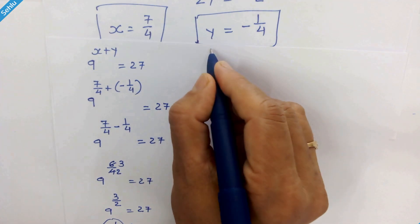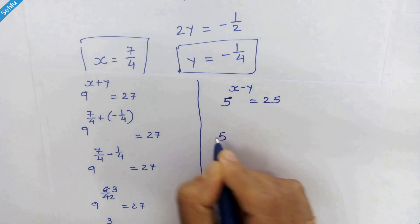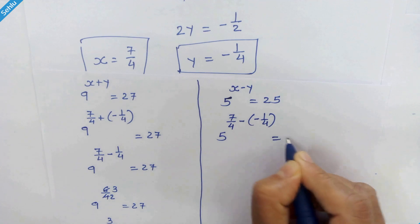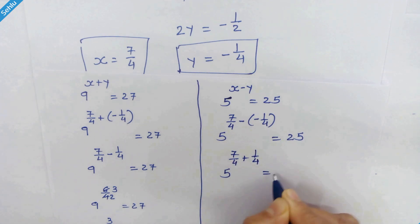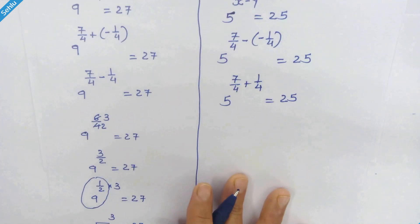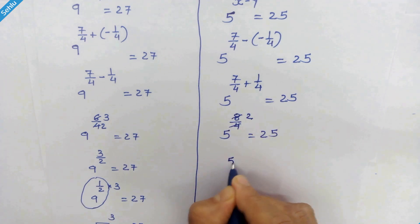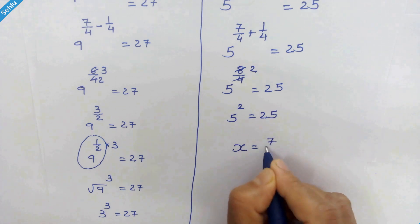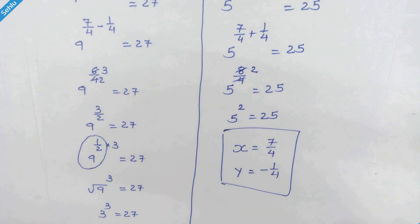Now for equation 2: 5 raised to x minus y is equal to 25. Substituting, we get 5 raised to 7 upon 4 minus minus 1 upon 4, which is 5 raised to 7 upon 4 plus 1 upon 4, equal to 5 raised to 8 upon 4, which simplifies to 5 squared is equal to 25. So x equal to 7 upon 4 and y equal to minus 1 upon 4 are the correct answers. Thanks for watching, don't forget to subscribe. We will meet in the next one. Bye bye.